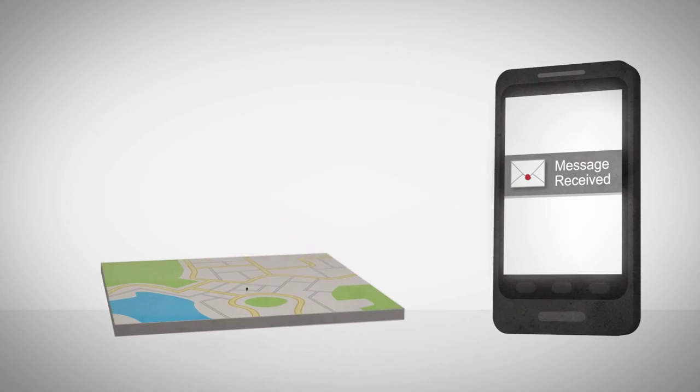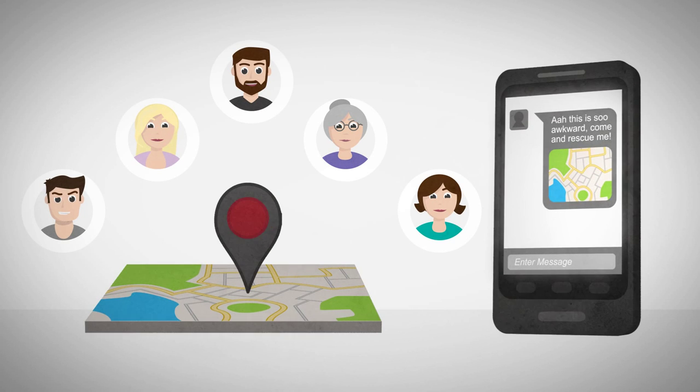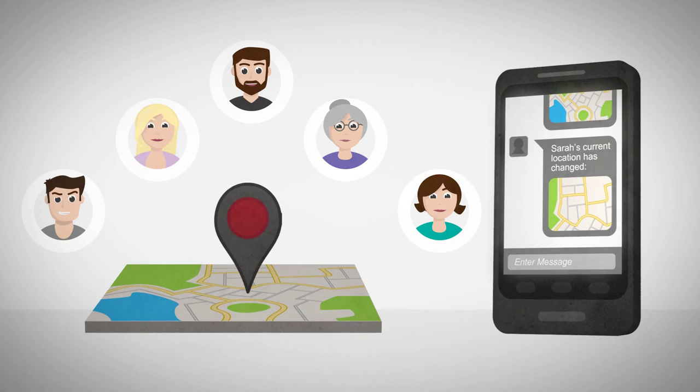The SMS includes your current location so your contact, or as many contacts as you choose, will know what's wrong, where to find you, and will be updated if you move.